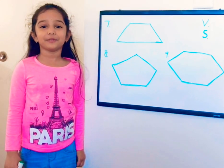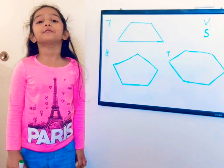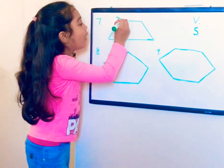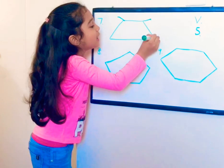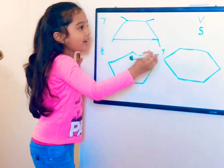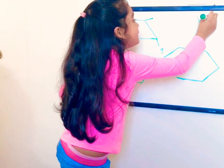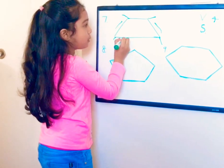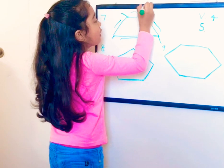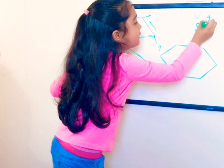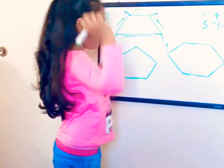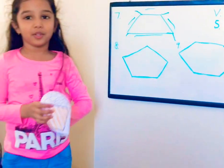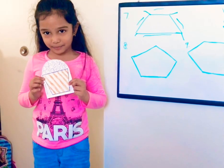Next is trapezoid. Let's count the trapezoid's vertices and sides. One, two, three, four — it has four vertices. And one, two, three, four — it has four sides. This popcorn box looks like a trapezoid.